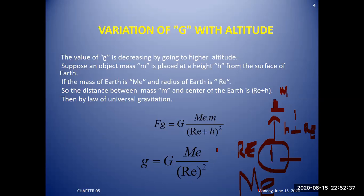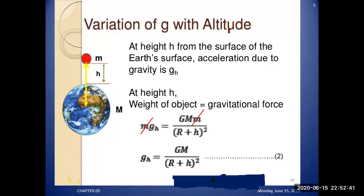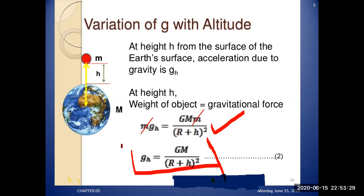This is the variation of g with altitude. You have moved an object from the surface of the earth; the mass of the earth is M_e, the object's mass is small m, and the distance between the two bodies center to center is R_e plus h. This gravitational force equals mg_h, and by canceling m from both sides you get the formula to calculate the value of g at height h.